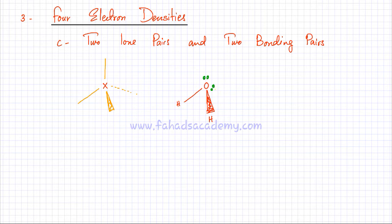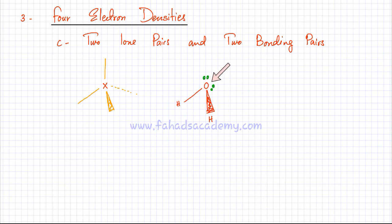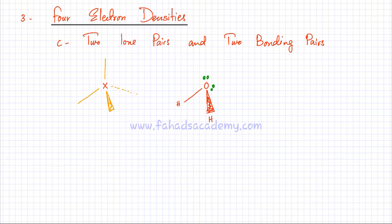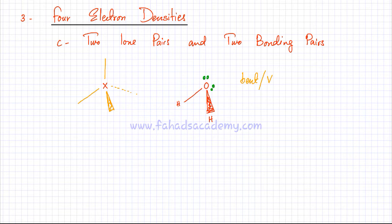The arrangement is exactly the same tetrahedral shape, but now it looks different because lone pairs don't count in determining molecular shape — there's nothing bonded on the other side. You're left with two bonds: one going one way and one coming the other way, with no atom attached on the lone pair sides. So the geometry of the molecule is simply a bent shape — a V-shaped or non-linear molecule.